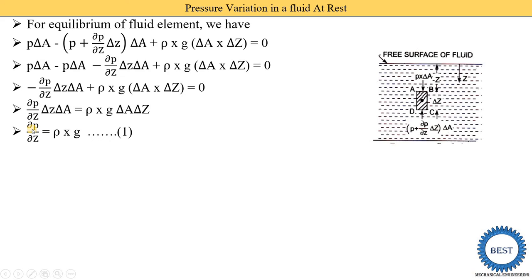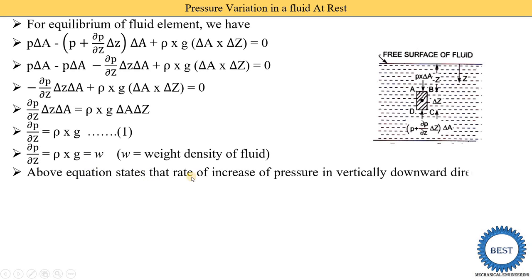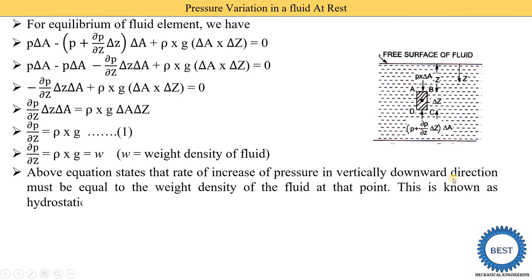The remaining equation is ∂P/∂Z = ρg. Here ρg is the weight density of the fluid. So we have derived the hydrostatic law: the rate of increase of pressure in the vertically downward direction must equal the weight density of the fluid at that point, i.e., ∂P/∂Z = ρg. This is known as the hydrostatic law.